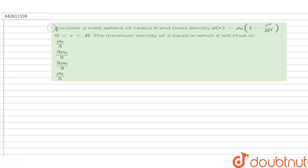Hello, welcome to Doubtnet. In this question, consider a solid sphere of radius R and mass density ρ(r), where ρ(r) equals ρ₀(1 - r²/R²), and r varies from 0 to R. Find the minimum density of the liquid in which it floats.